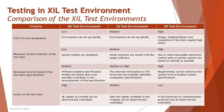The next criterion is the necessary level of maturity of the test item — what level of maturity is needed for a test item to be executed in Mill, Zill, and Hill. For Mill it is low, as system models are simulated and not much has to be done. In Zill it is medium — initial functions are tested with the target software. In Hill it is high: one or more executable electronic control units or partial systems are tested as entirely as possible, so this system-driven approach requires more maturity of the product being tested.